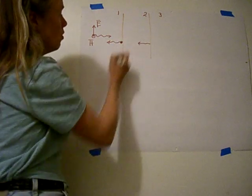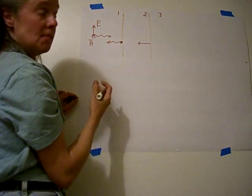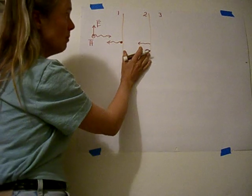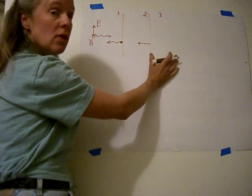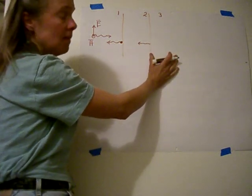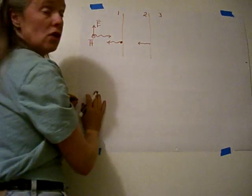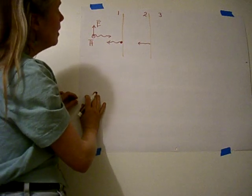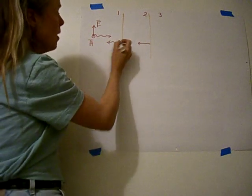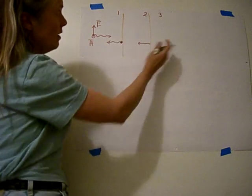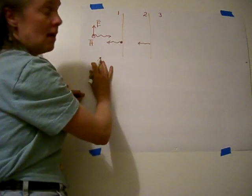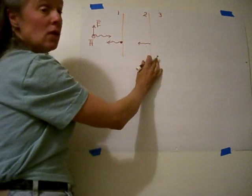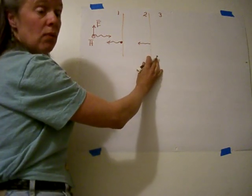So this reflection coefficient has to be a function of region number one, region number two, and region number three. I'm going to show you how to analyze that using the Smith chart. Since we want this reflection coefficient, we have to analyze the entire system together, so we're actually going to start over with region number three.